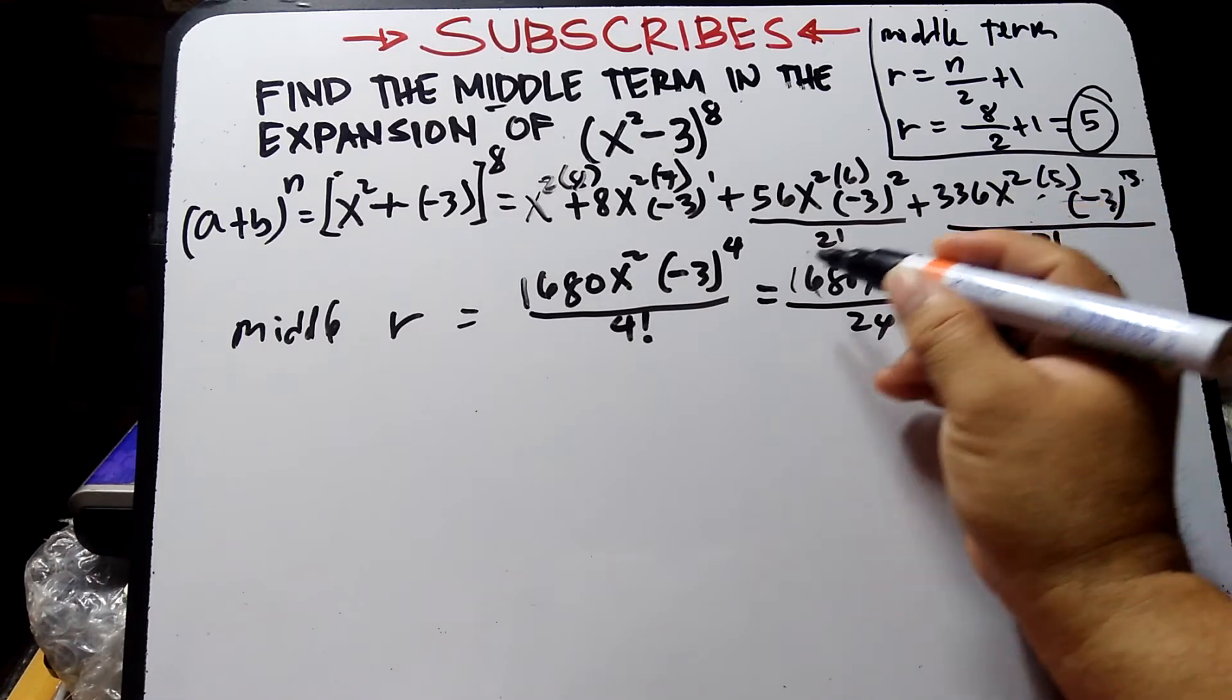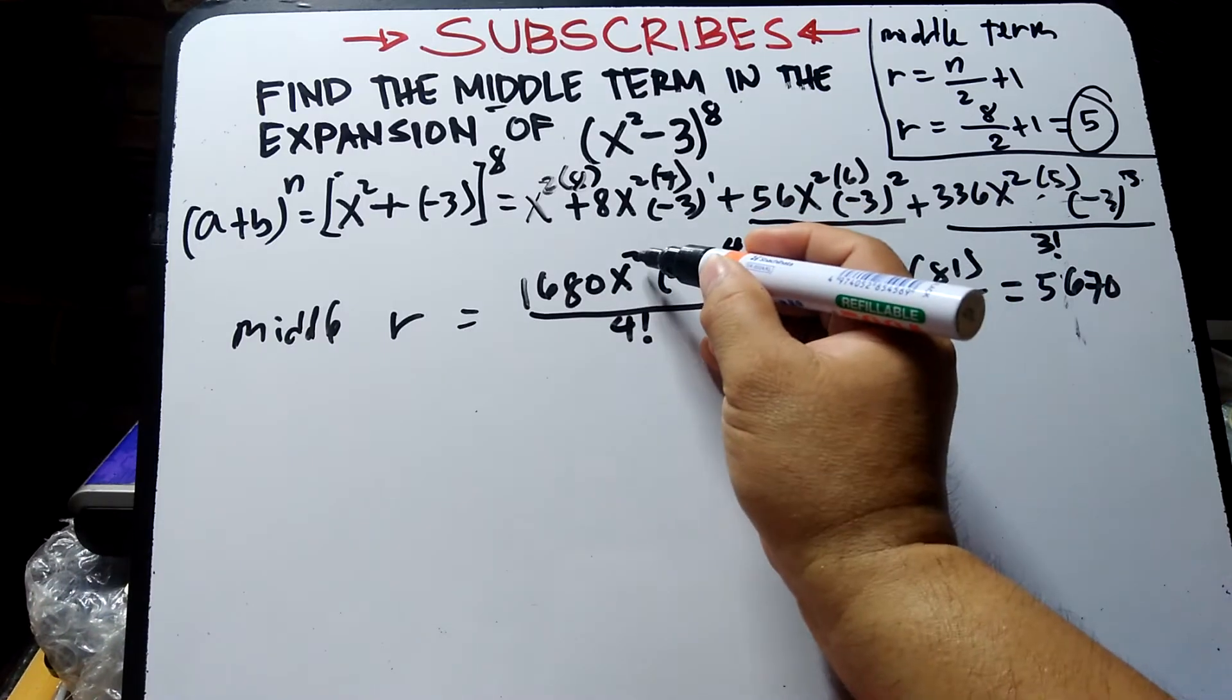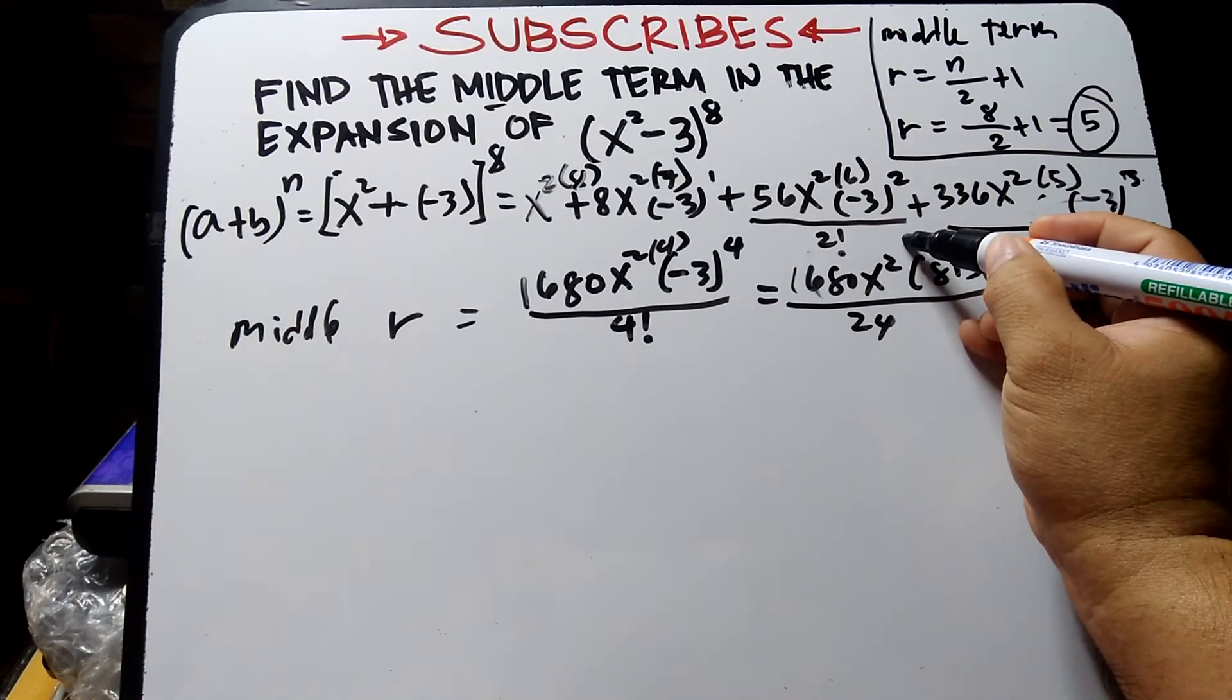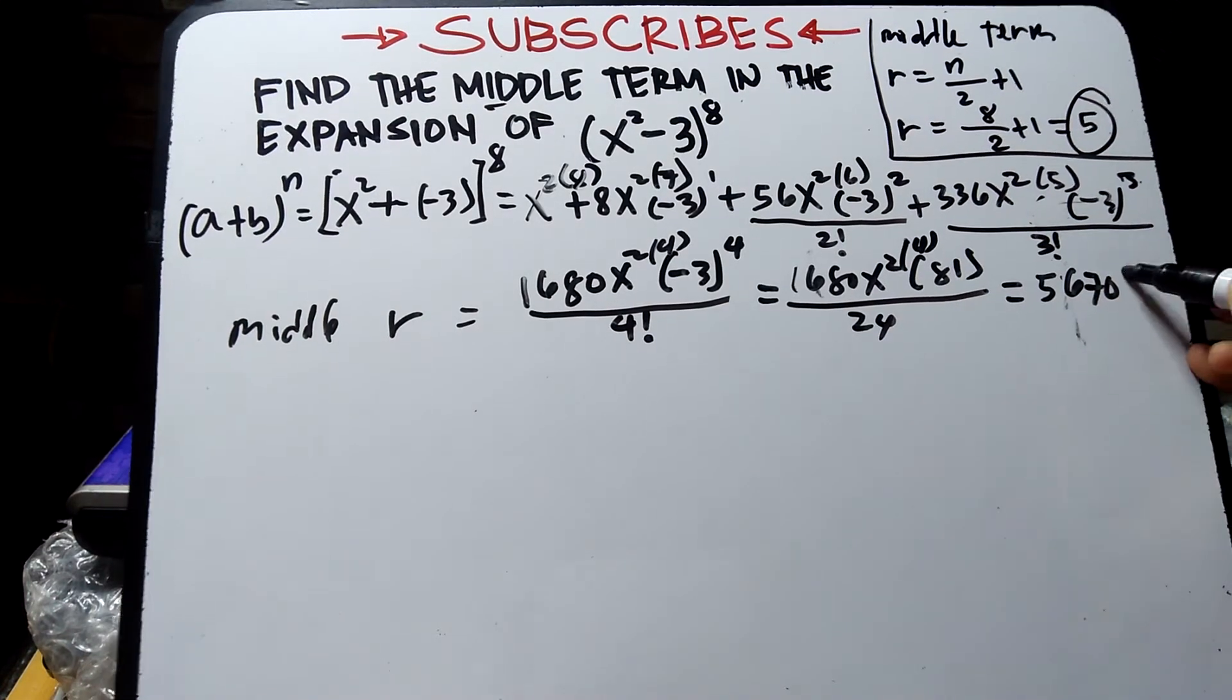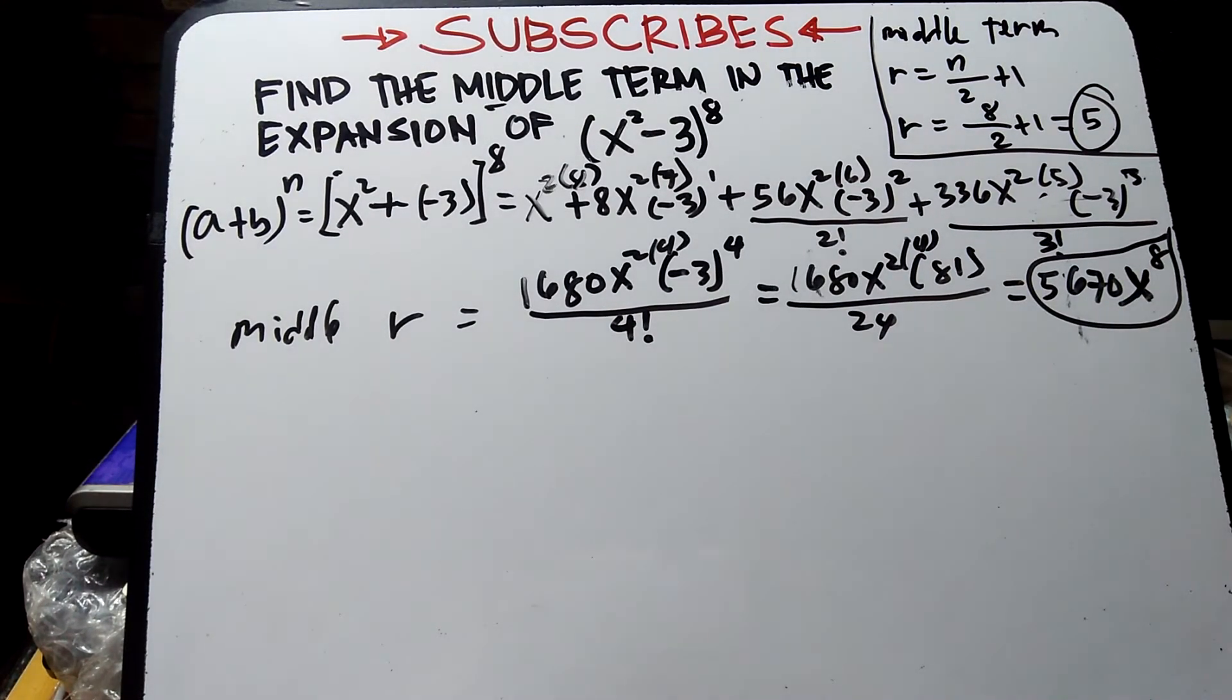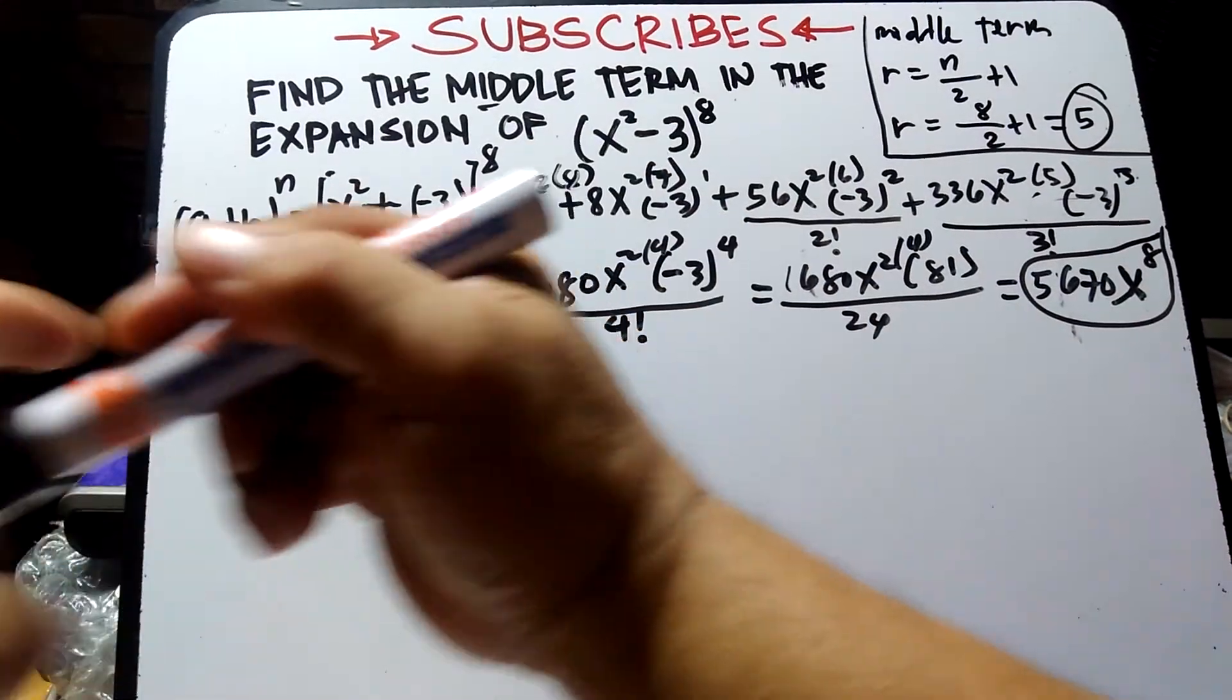And this becomes 4, so x², 2 times 4 becomes 8. This is the answer: 5670x⁸ by expansion. Now solve using another method by formula: the rth term.